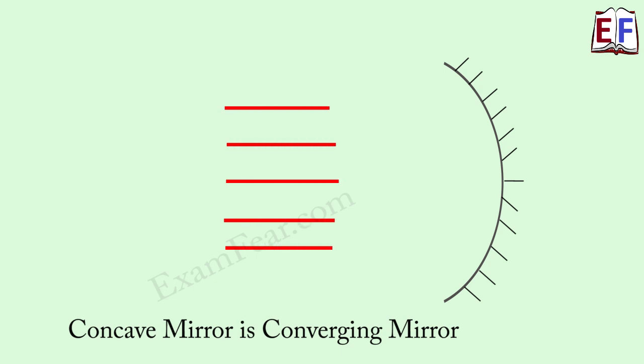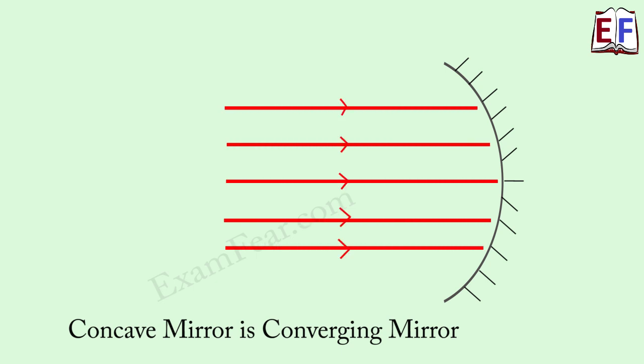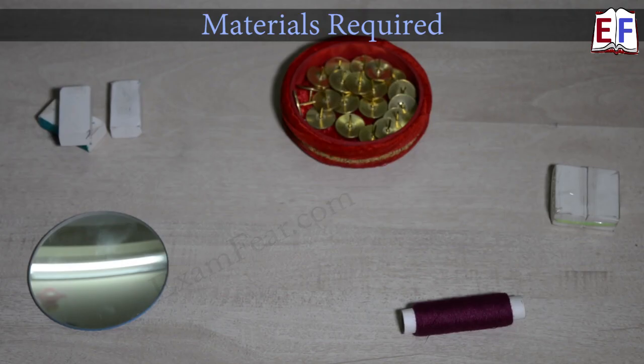We know that a concave mirror is a converging mirror, and focal length is the important parameter which decides the converging power of the concave mirror. So today we will determine the focal length of a concave mirror.